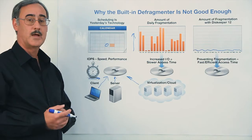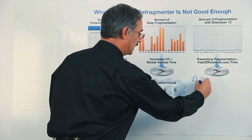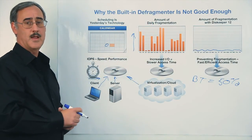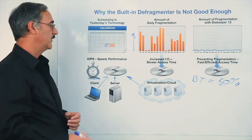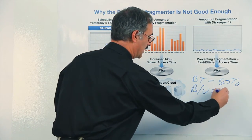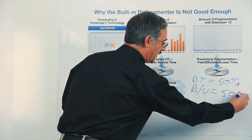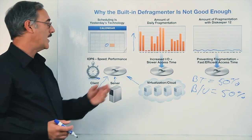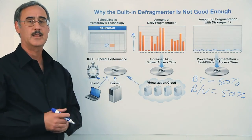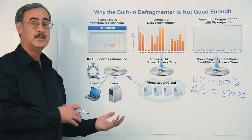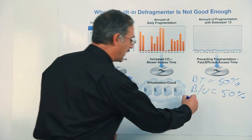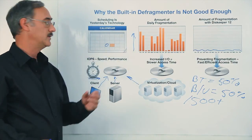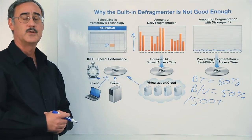We've seen reports from customers where boot time, for example, has been reduced in time by 50% or more. We've seen cases where backup has also been reduced in time by 50% or more. We've seen cases from real customer sites whose fragmentation was so bad that after handling and preventing any future fragmentation from occurring, they saw a whopping 1500% improvement in disk I.O. responsiveness and reduced elapsed time.